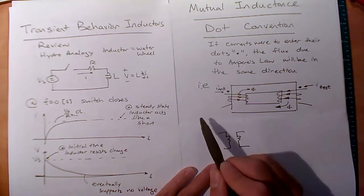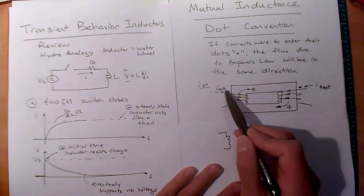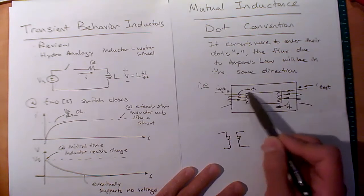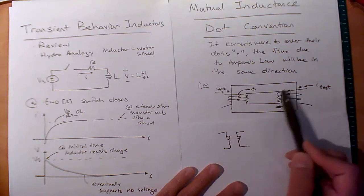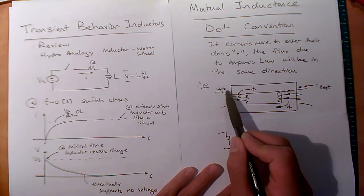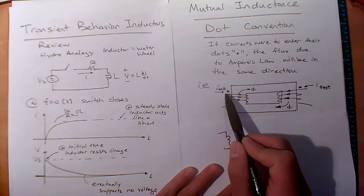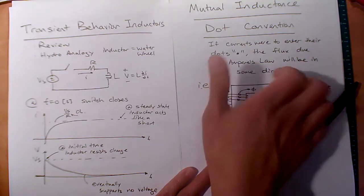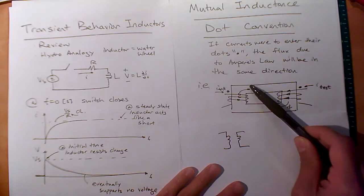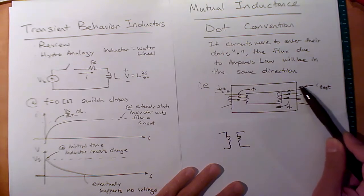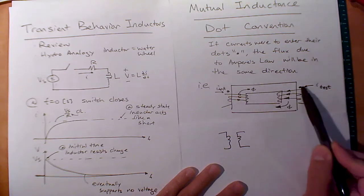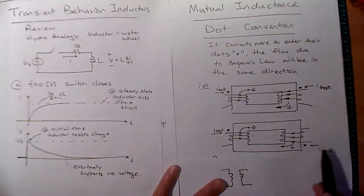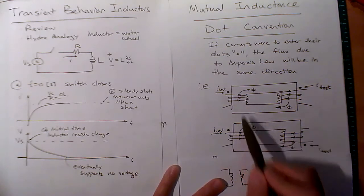The way you set up a dot: if test currents were to enter their respective dots, the flux due to Ampere's law will be in the same direction. These test currents are not the actual reference currents I1 and I2 — they're just test currents. So if a current enters the dot side, you'd want the flux going in the same direction. On a transformer core where you can see the coil wrappings, check: if a test current enters this dot, by Ampere's law and the right-hand rule, the flux goes up. If a test current enters the other dot, the flux on both sides goes in the same direction. Dots are set up correctly.